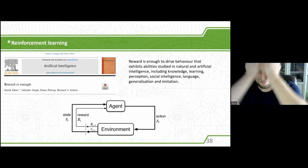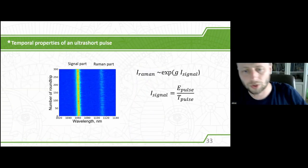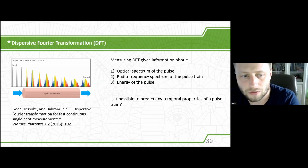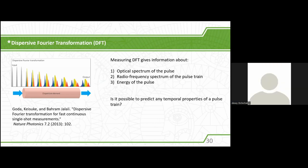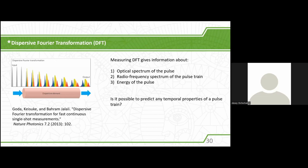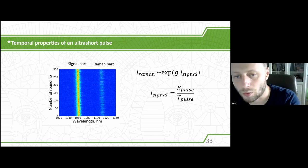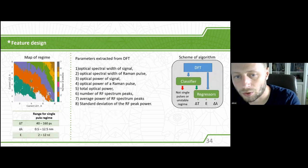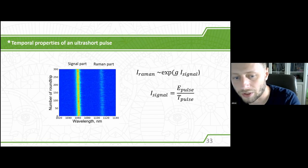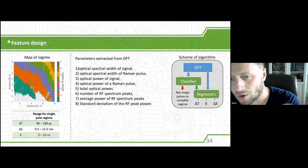Can you clarify what quantity is measured? I use the dispersive Fourier transformation method: you put a pulse train through a dispersive element and measure with a photodiode — it's a time-resolved voltage. After that you build a picture where every row is the spectrum of a single pulse. From this data, you can extract features such as optical spectral width. There are about eight such features, and these are the input parameters into our machine learning algorithm — artificial neural network, random forest, or XGBoost — to predict pulse duration.